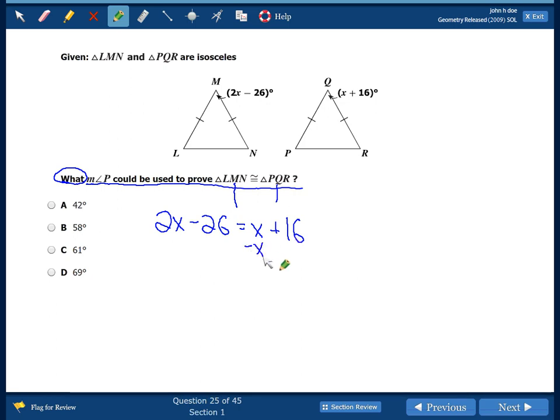So whenever I take a look at this, M and Q are both in the same position. So that means 2X minus 26 is equal to X plus 16. So I subtract X from each side. X minus 26 is equal to 16. And add 26. X is equal to 42.